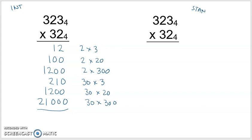Now let's remember we're adding in base 4. The ones place is just 2. 1 and 1 makes 2. Then we've got 2 and 2 and 2 and 1, which is 7 — in base 4 that's 1 four with 3 left over. Next column: 1, 2, 3, 4 — that is 1 four with 0 left over. 1 and 2 makes 3. So 323 base 4 times 32 base 4 is 30322 base 4.